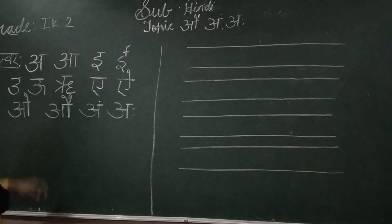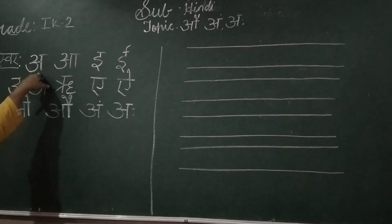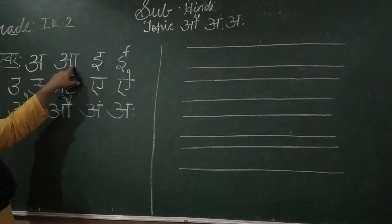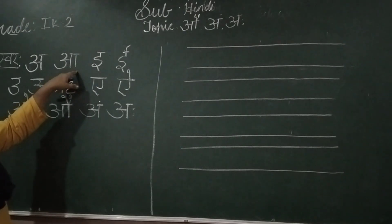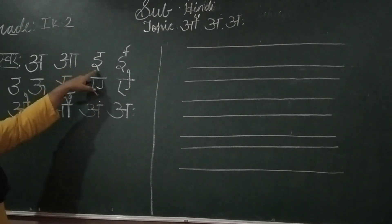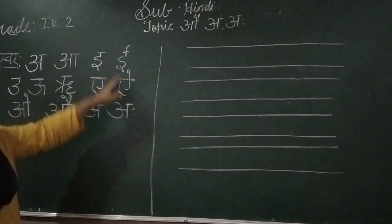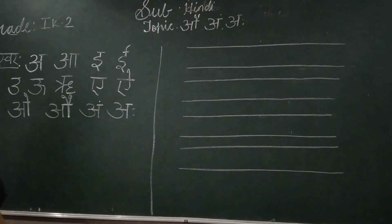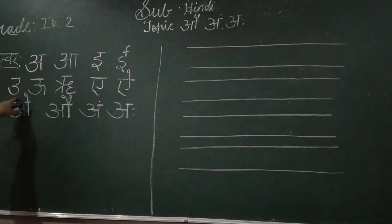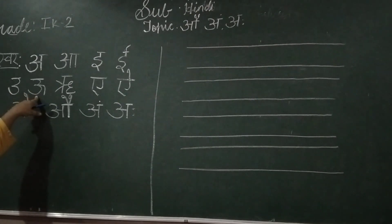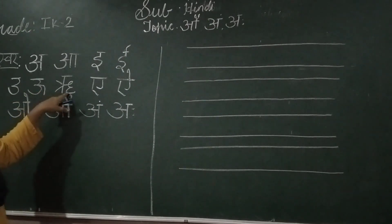A says anna — pomegranate. A says aam — mango. I says emunni — tamarind. I says eek, eekamadla — sugarcane. U says ullu — awl. U says oon — ullan. R says rishi — sage.